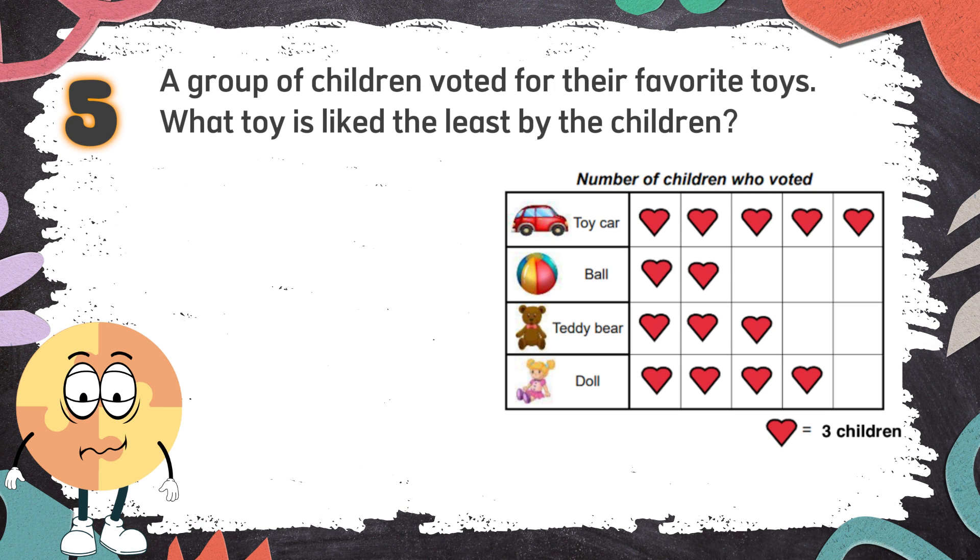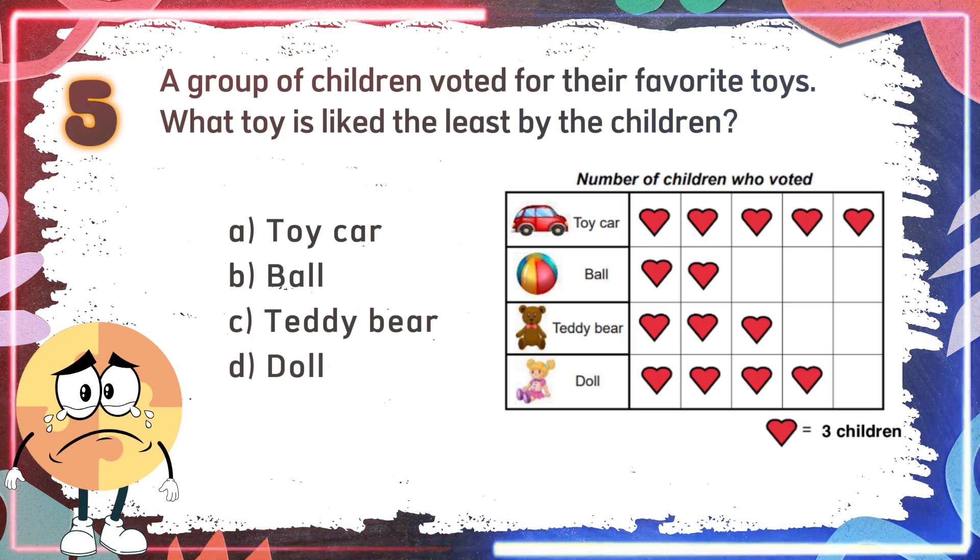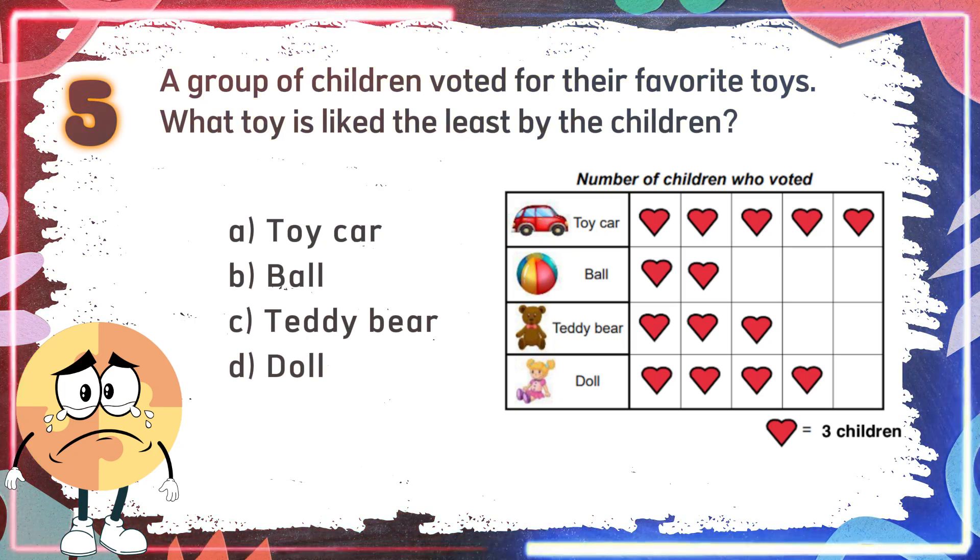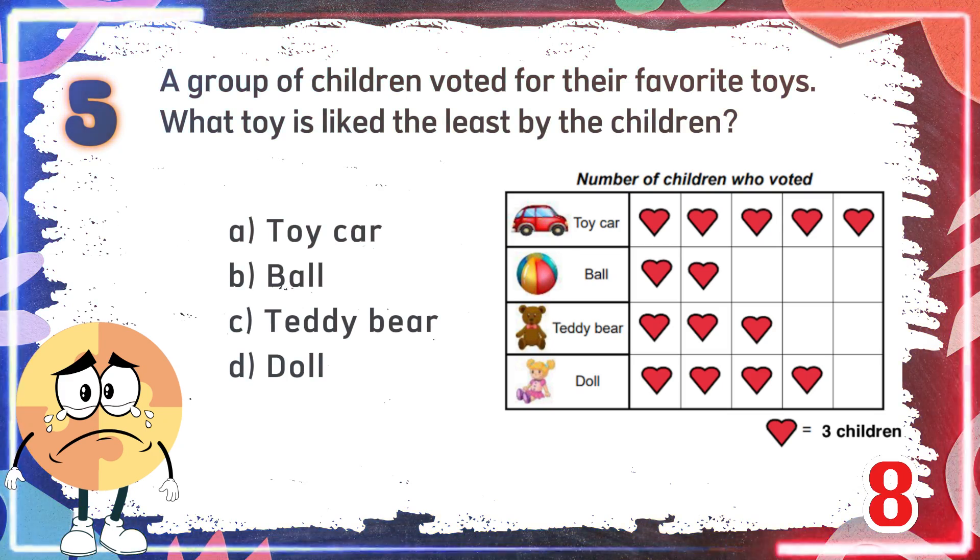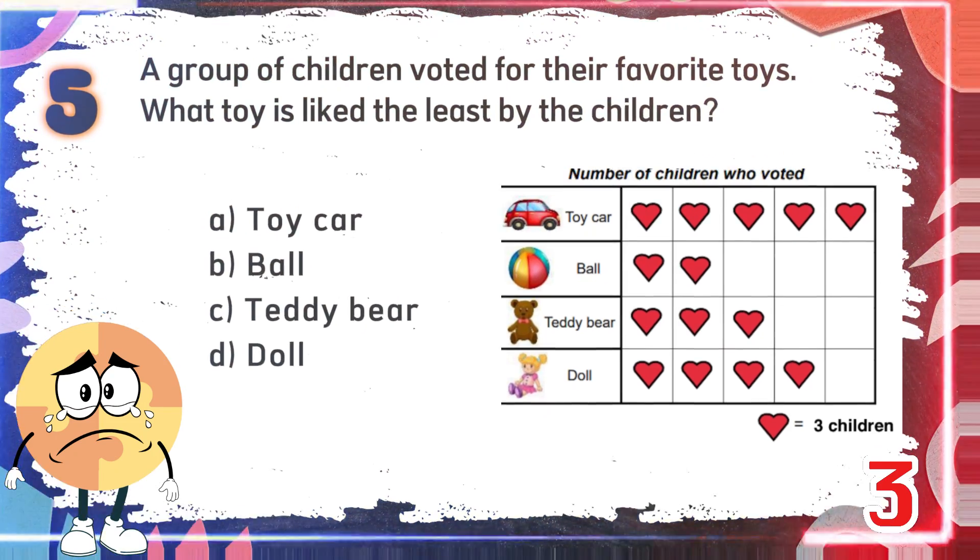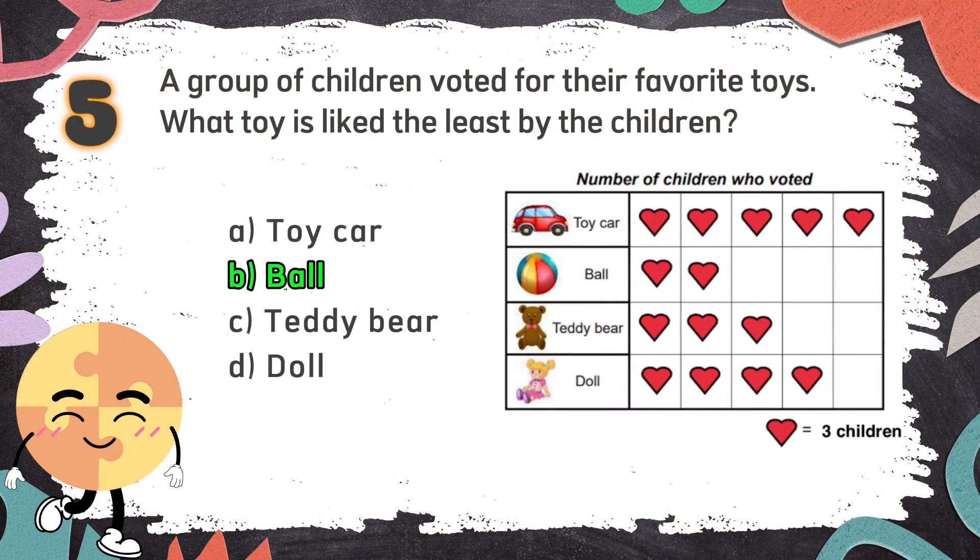Number 5: A group of children voted for their favorite toys. What toy is liked the least by the children? The choices are A, toy car, B, ball, C, teddy bear, D, doll. The correct answer is B, ball.